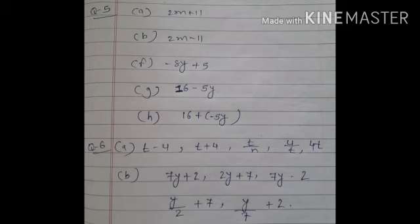G: Y is multiplied by 5, and the result is subtracted from 16. याद रखना — result है उसको subtract करना है किसमें से? From 16. 'From' word के बाद जो भी number या alphabet है वो हम पहले लिखेंगे, and उसमें से जो remaining part है वो subtract होगा. तो यहाँ पे हो जाएगा 16 minus 5Y. H: Y is multiplied by minus 5 and the result is added to 16. So 16 plus bracket minus 5Y. Plus की sign है इसलिए bracket में लिखा — ताकि दोनों sign एक साथ ना हो जाएं, उसको differentiate करने के लिए.